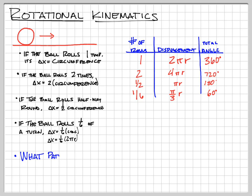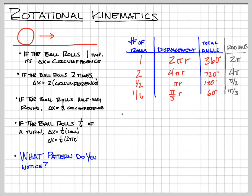What we're going to do now is look at a pattern, and it's a little tough to see. Just looking at that table, the pattern may be there if you're really good at converting angles. But what we need to do is look at that angle in radians — we're going to notice something pretty cool. So: 360 degrees in radians is 2π radians, 720 degrees is 4π radians, 180 degrees is π radians, and 60 degrees is π/3 radians.